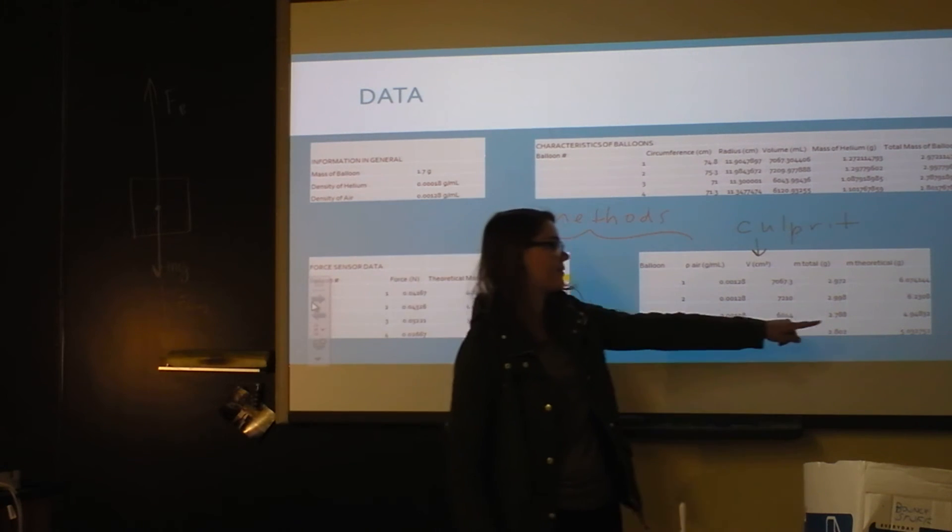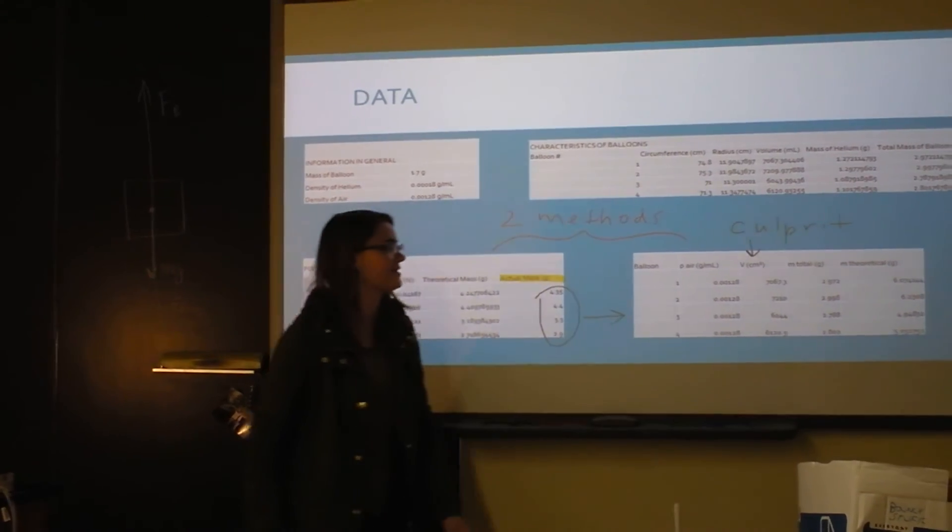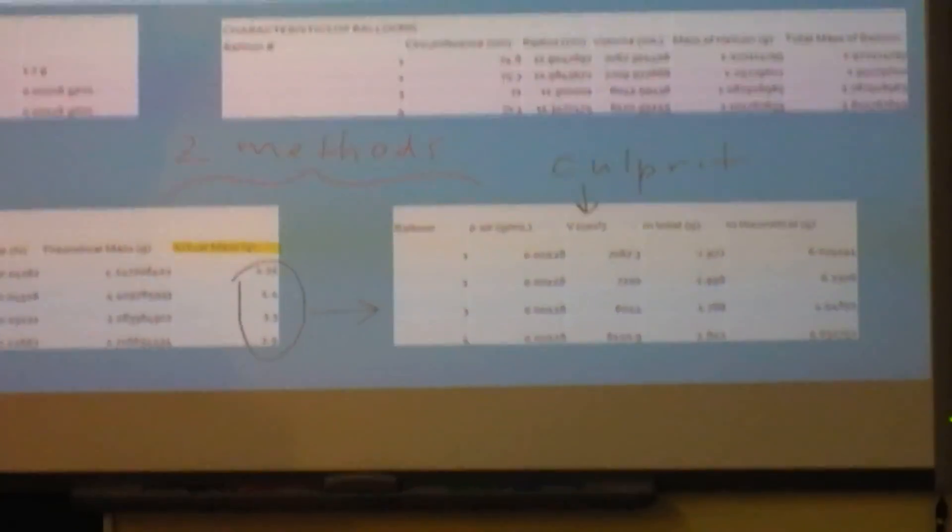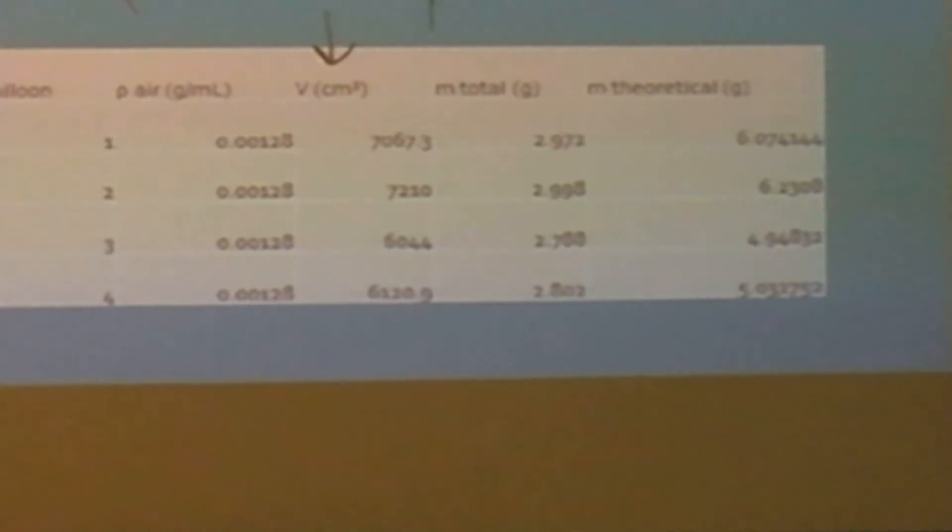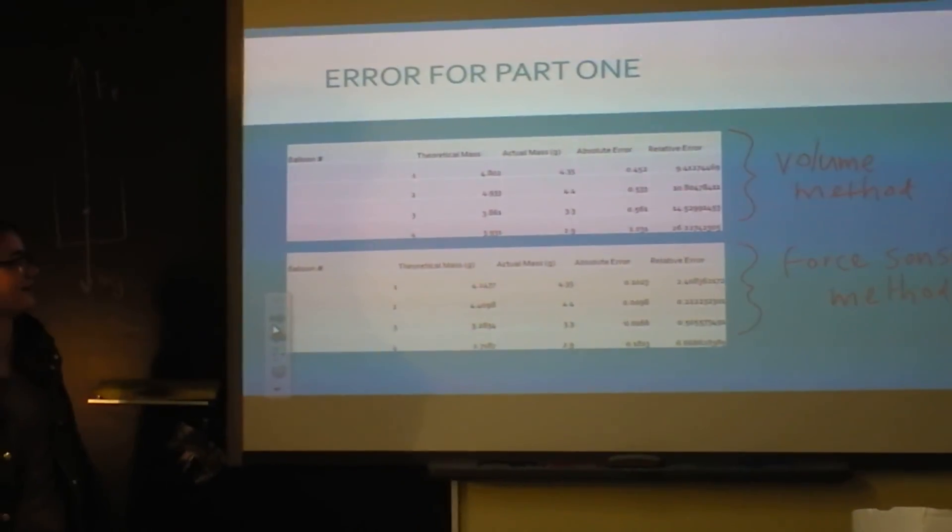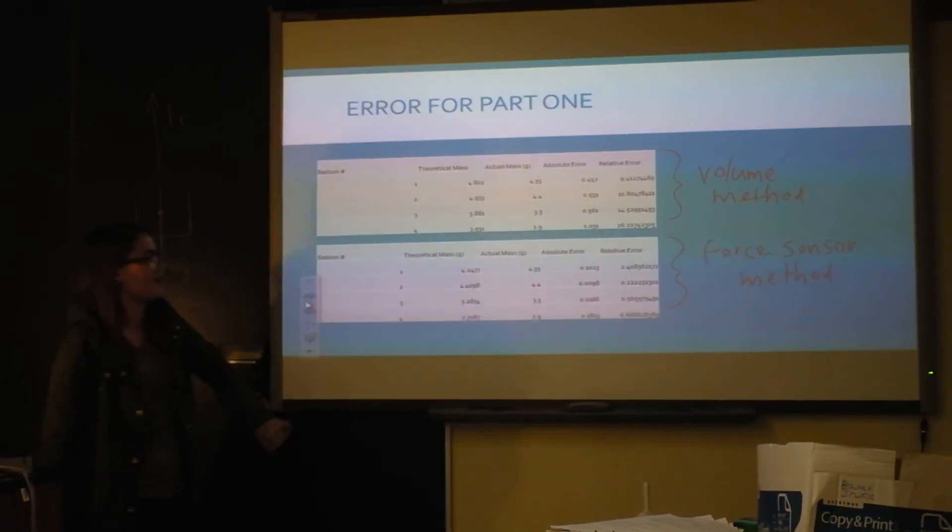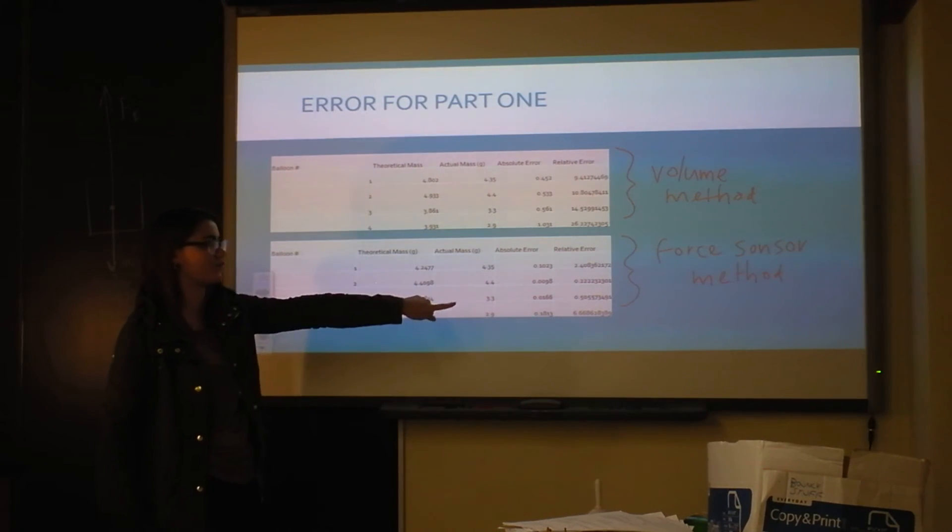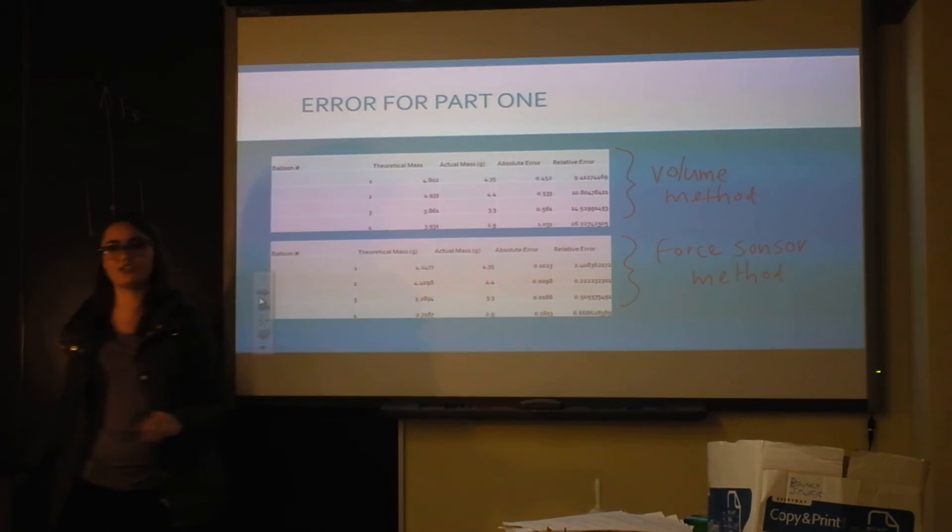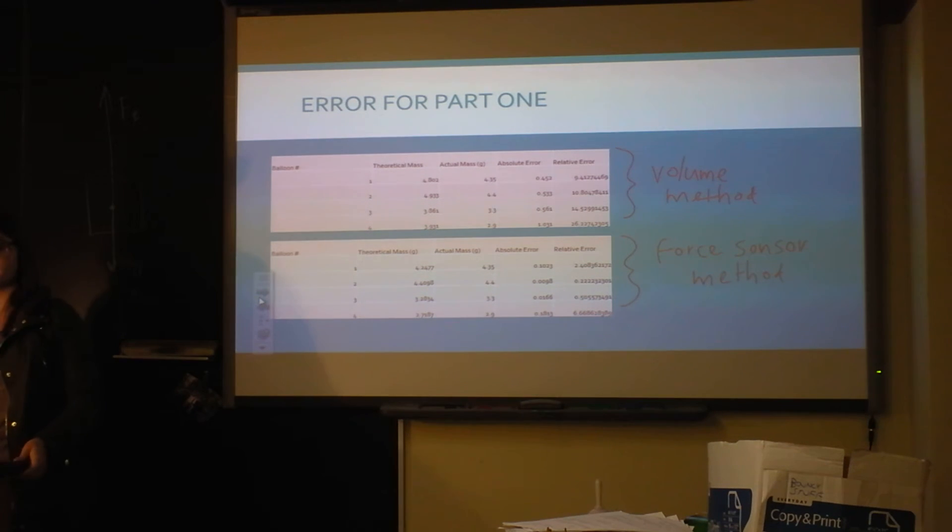The other way that I figured out how much mass I would add was using the volume. As you can tell, the theoretical mass is ginormous compared to the actual mass I had to add because the volume is a lot smaller than I actually calculated. I think it's not a sphere. Here's my balance there. As you can tell, the error in the one that I calculated the volume is a lot larger than the force sensor method. The force sensor method was actually really accurate, probably because it was being done by computers and not humans.